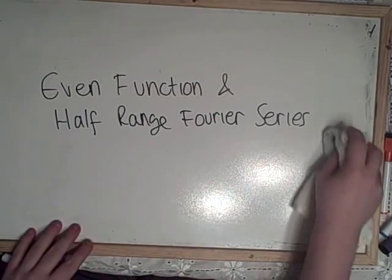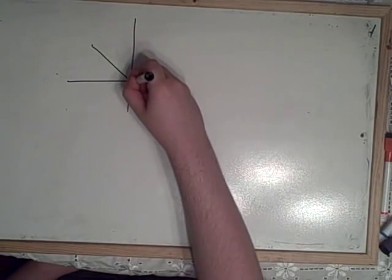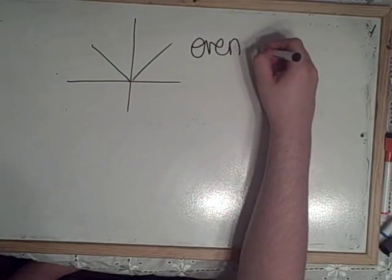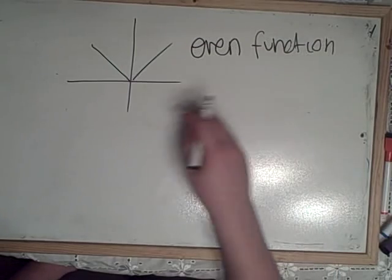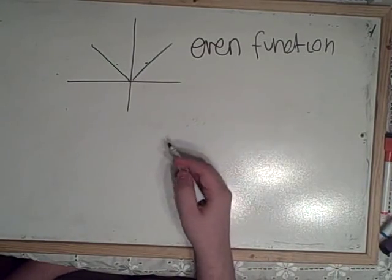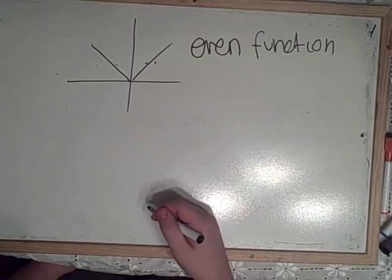Right now, first off, even functions. Even functions are very simple. This is the simplest even function. An even function in a Fourier series is one that's reflected. That's all it's saying. So because this side is the same as that side, it's an even function.